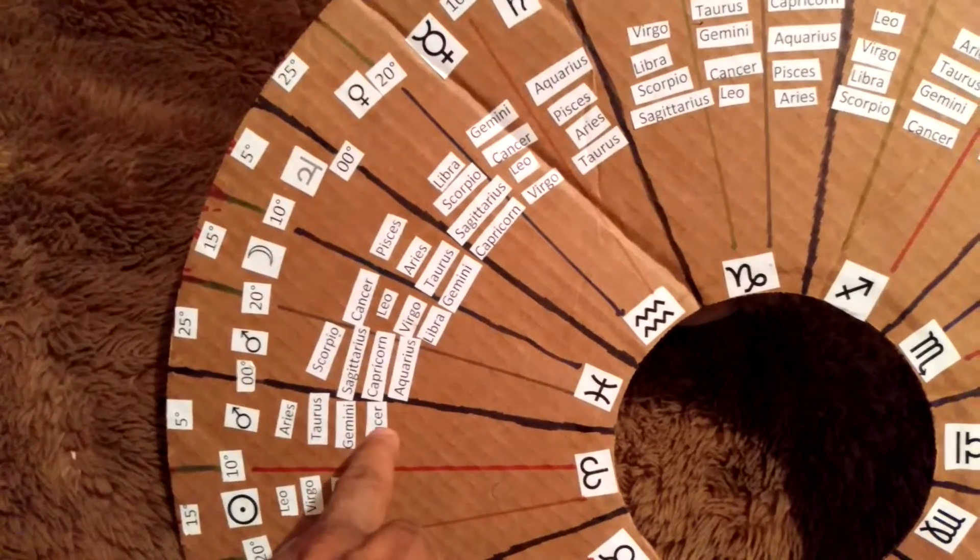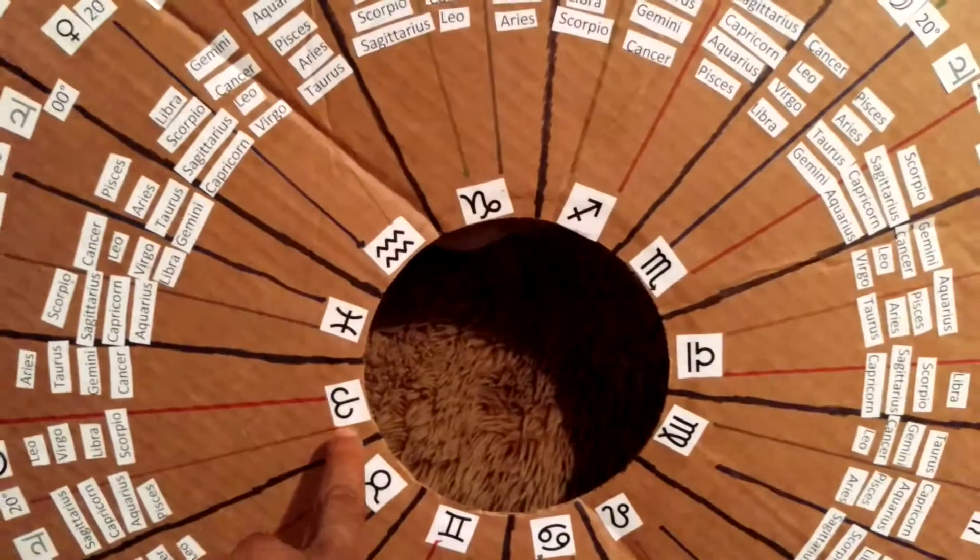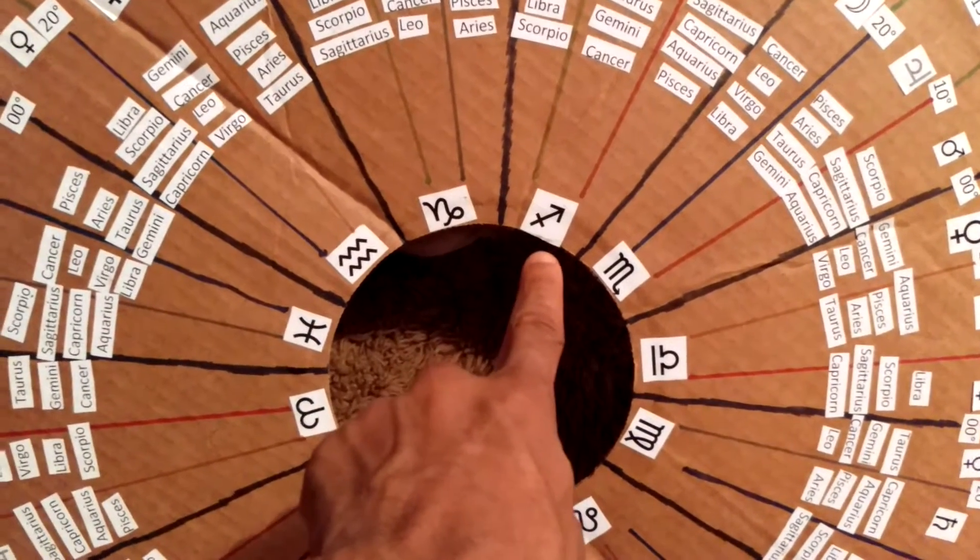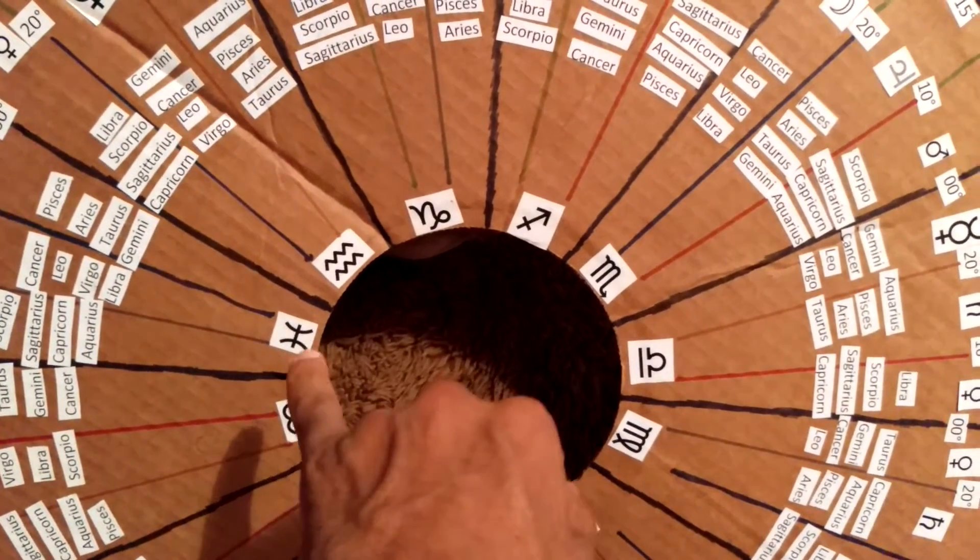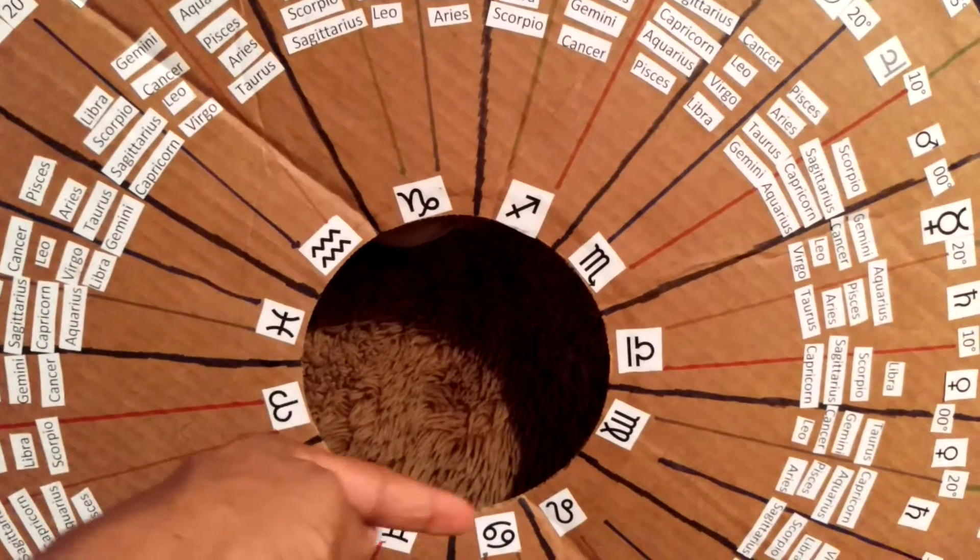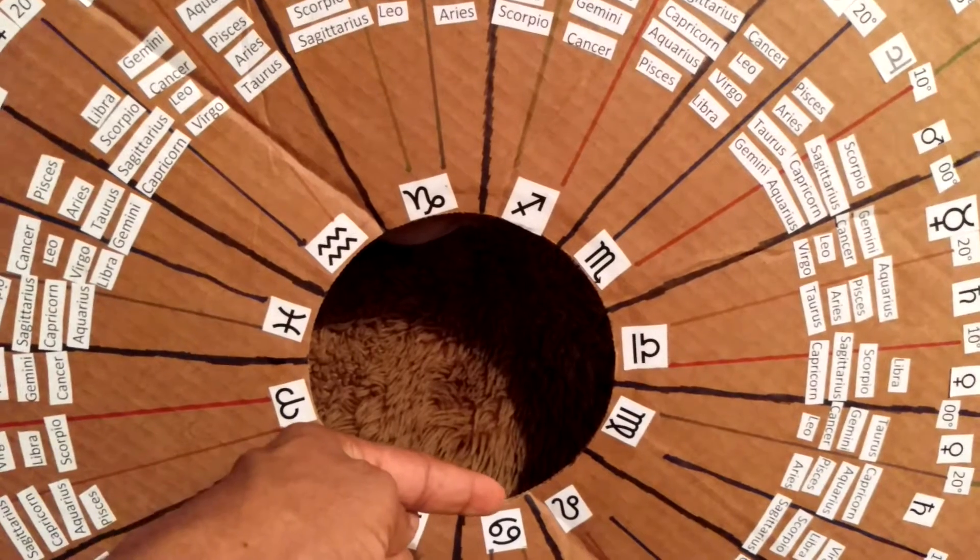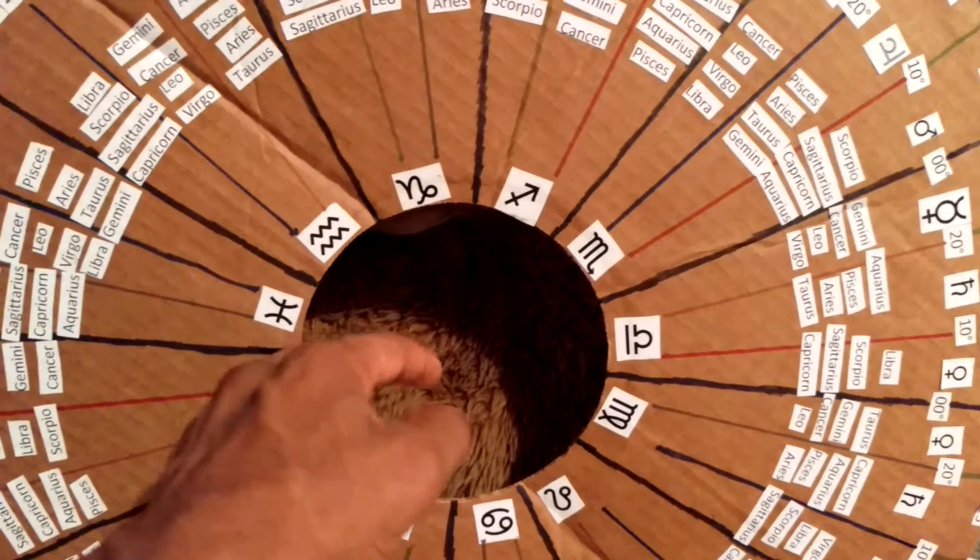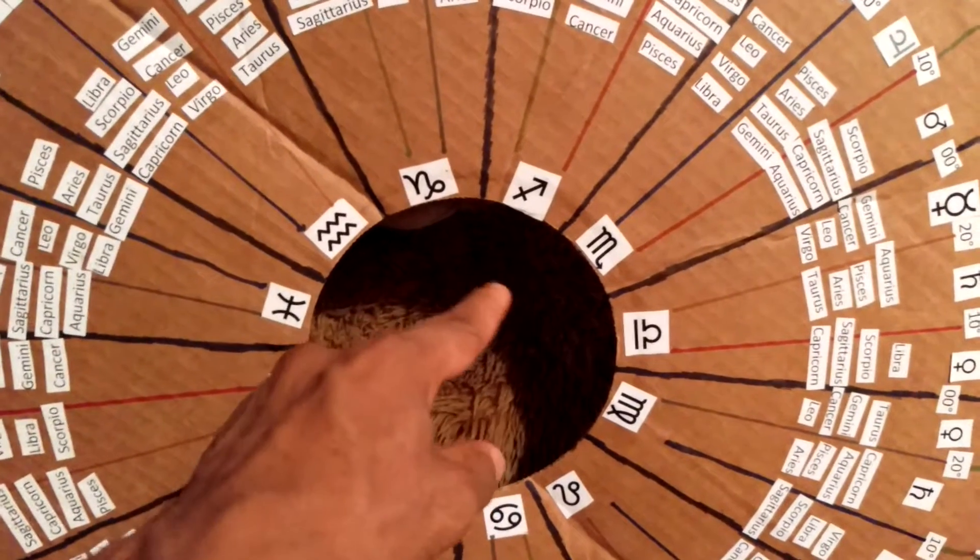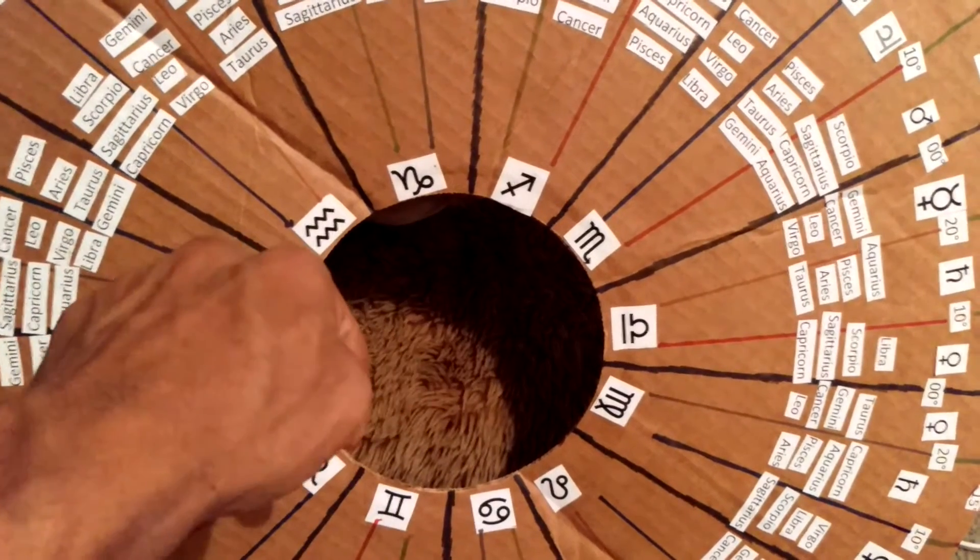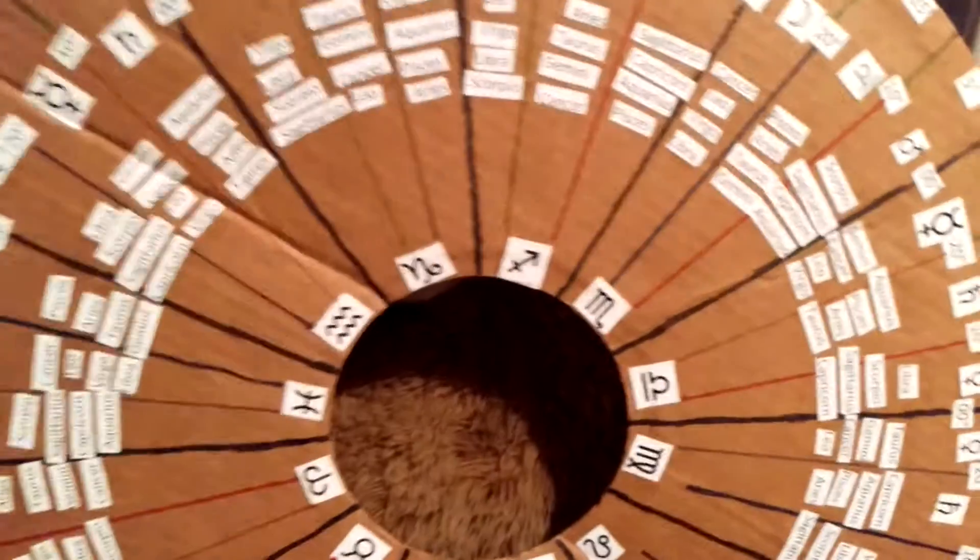each sign is ruled by an element, the fire signs, Aries, Leo, Sag, the water signs, Pisces, Scorpio, Cancer, I don't even know where they at, but I already know where they at, you know what I'm saying, air, it's math, you know what I'm saying, what was the other one, earth.